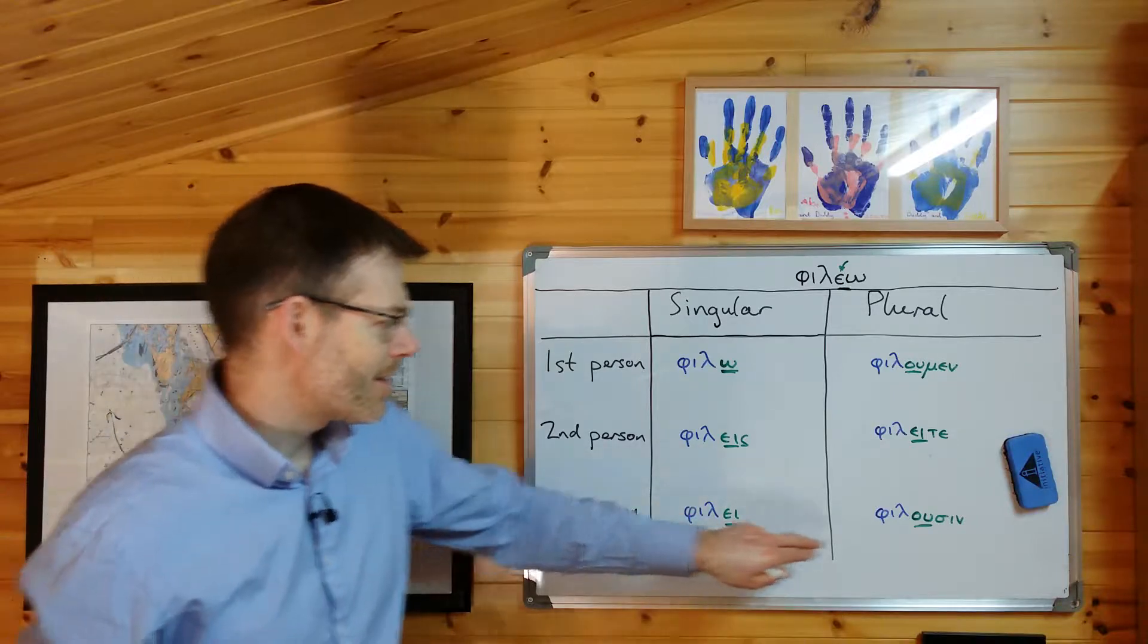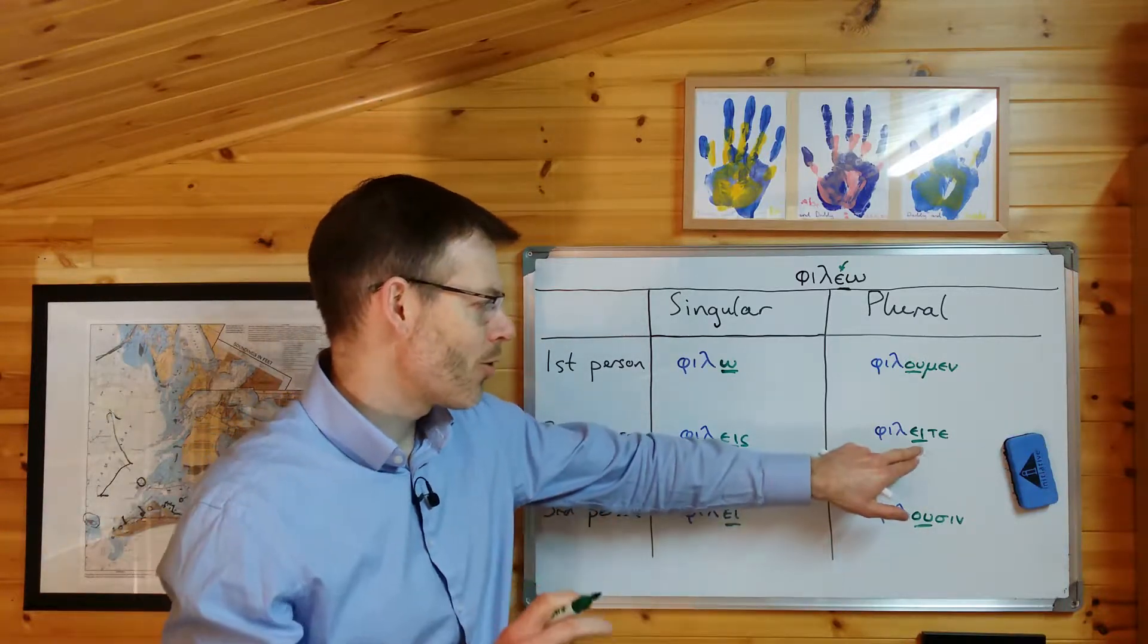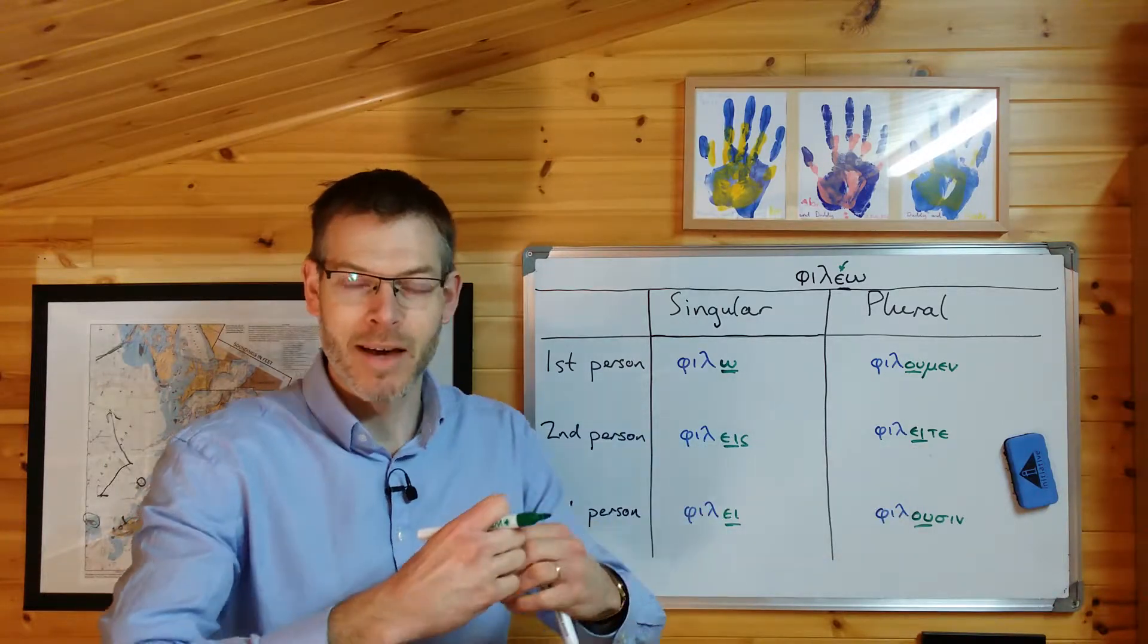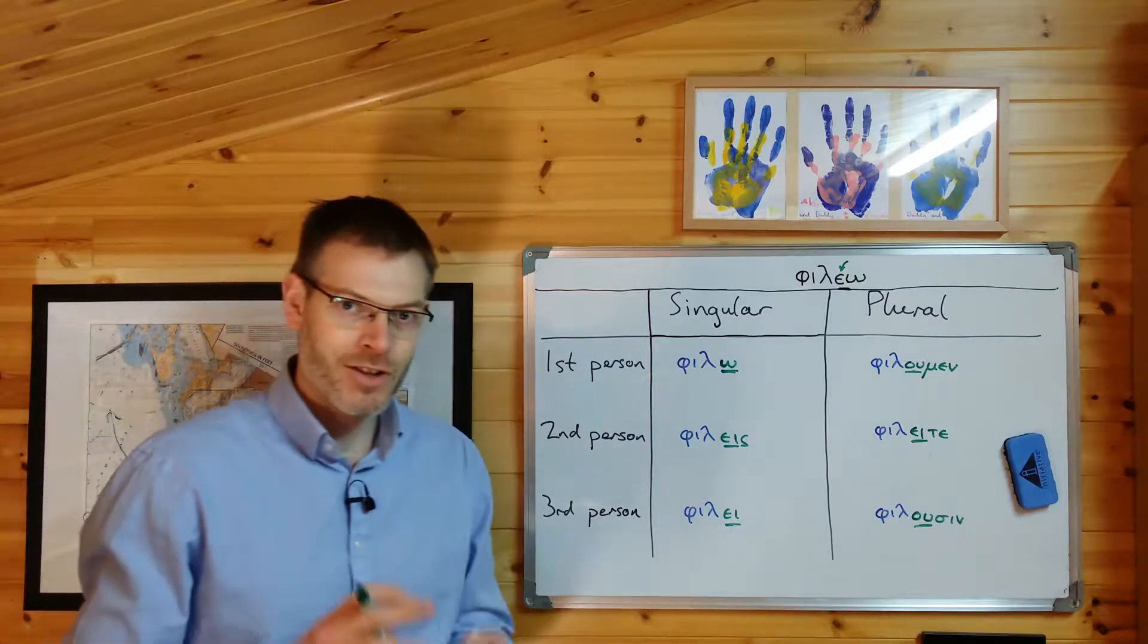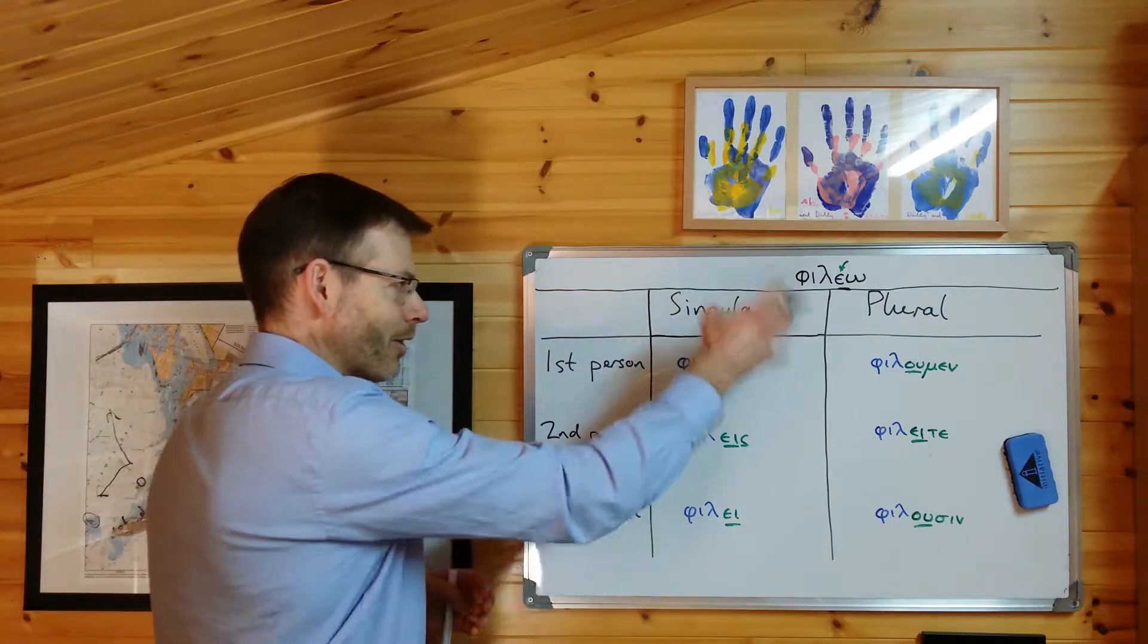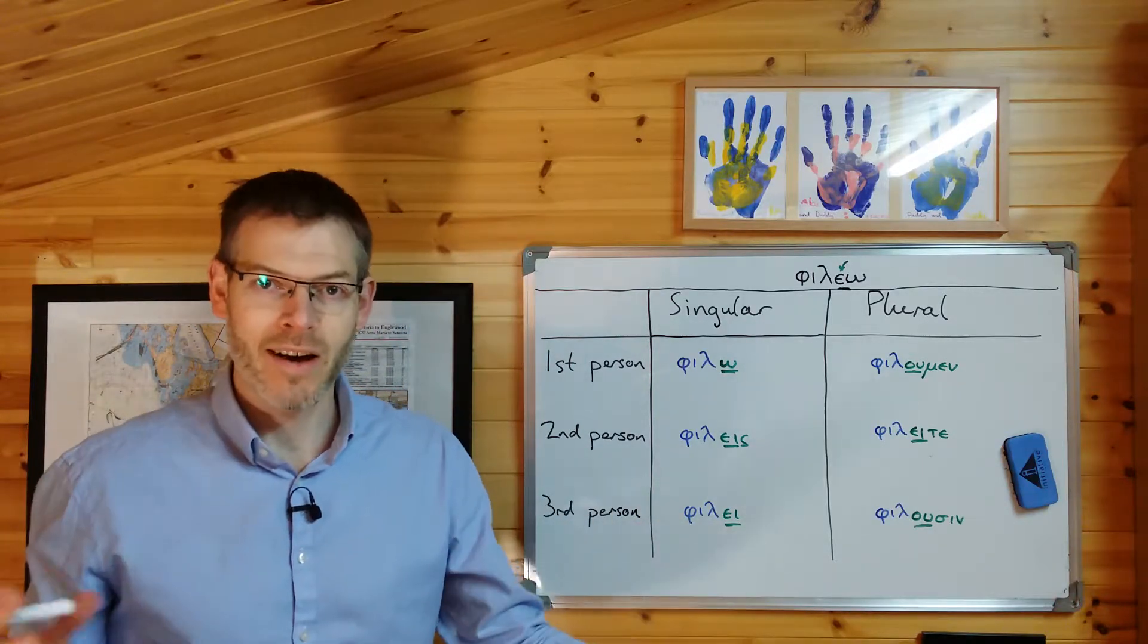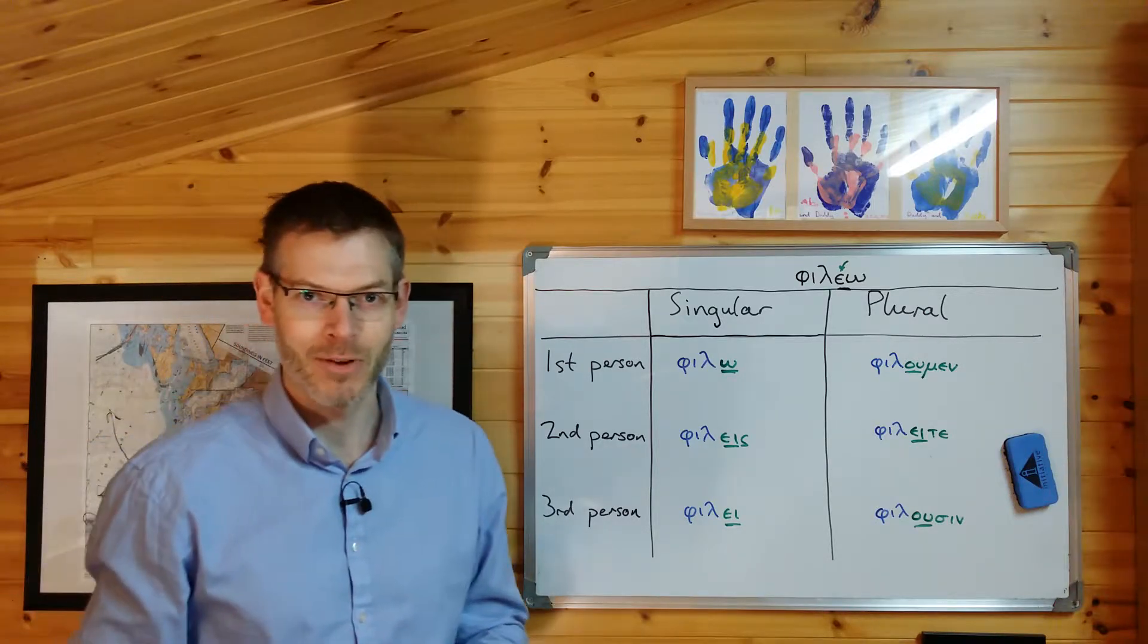Long vowels and existing diphthongs in the endings will remain unchanged. But if there's a short vowel, the epsilon will combine with it to make a diphthong. Now, that should help you, then, to generate the table of the verb φιλέω from what you already know. And it's much more valuable if you understand the rules, because then these rules will start to help you later on.